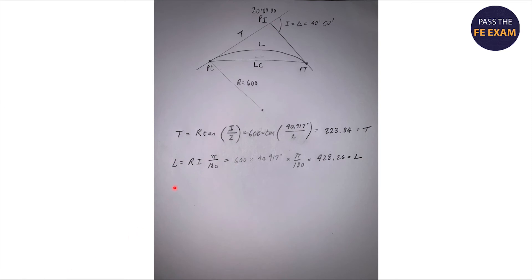Next, we can use the equation given and solve for the length by plugging in again the radius and the deflection angle. We can determine that our length is 428.26. So now we've solved both the tangent and the length.